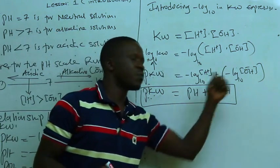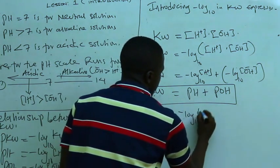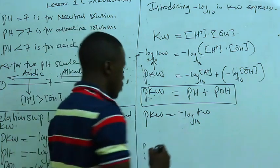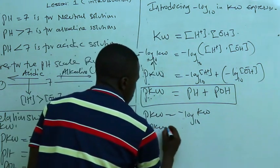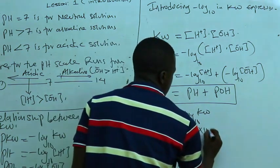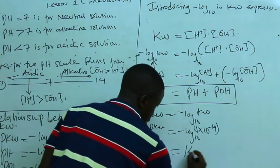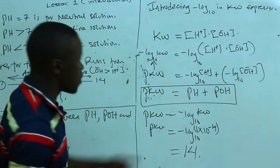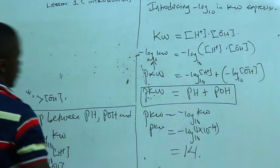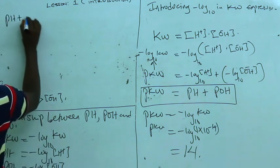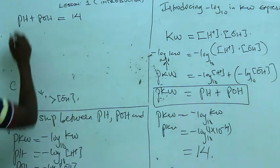Therefore PKw = pH + POH. But PKw is the negative log base 10 of Kw = 1 × 10⁻¹⁴, which equals 14. So we can rewrite this expression as: pH + POH = 14. This is because the value of PKw is known and is 14.